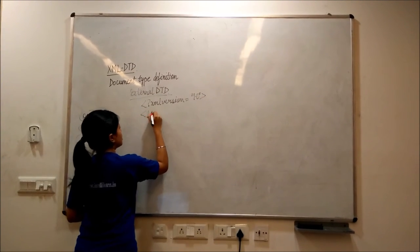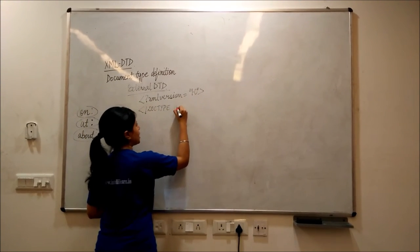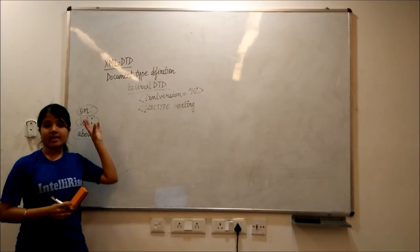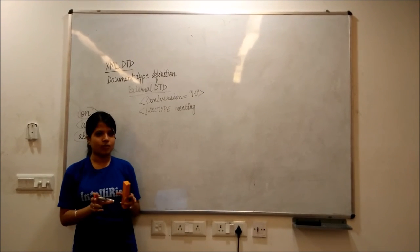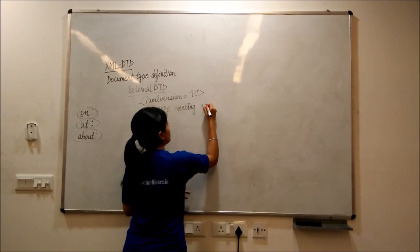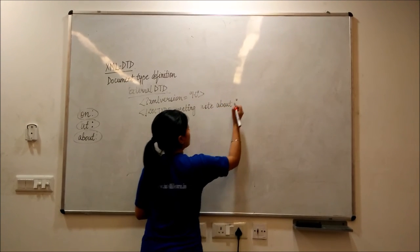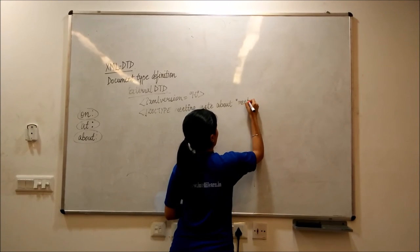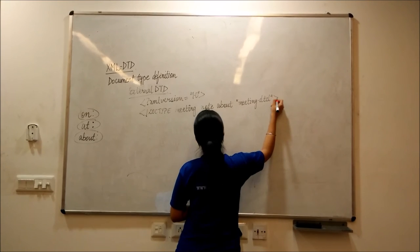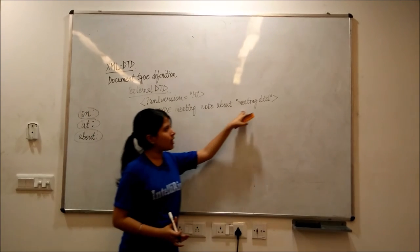Then, I'll start with doc type meeting, and I've already explained that in external DTD, we create an external DTD file which is synced with the XML document. Then, what we'll write is system and we'll write like meeting.dtd. Where this meeting.dtd is our external file, where we'll declare all our DTD files.